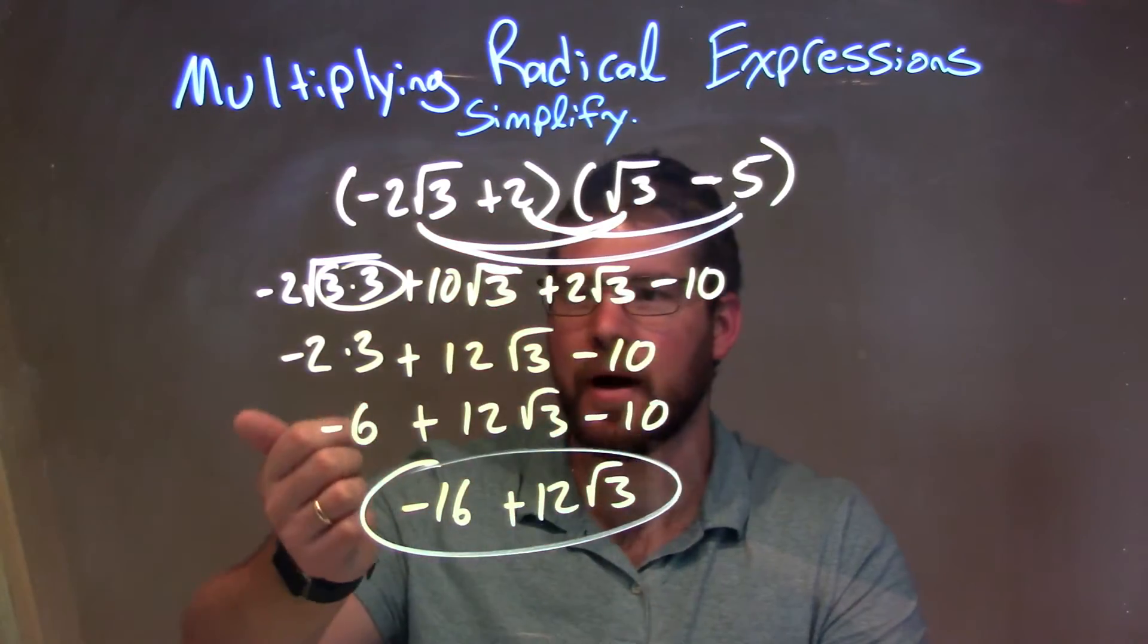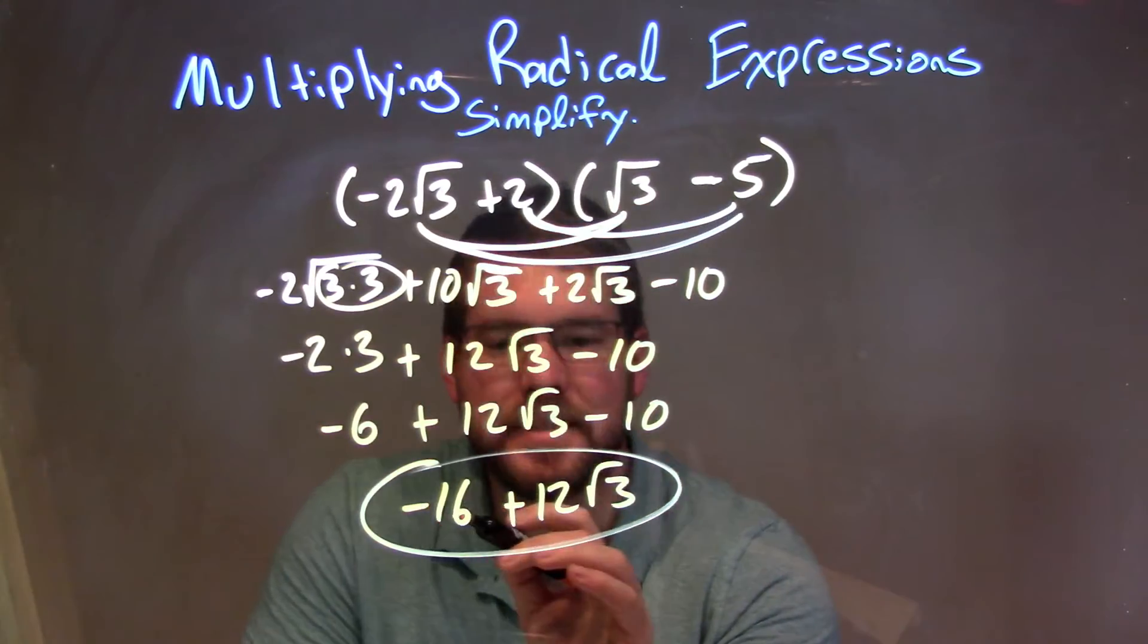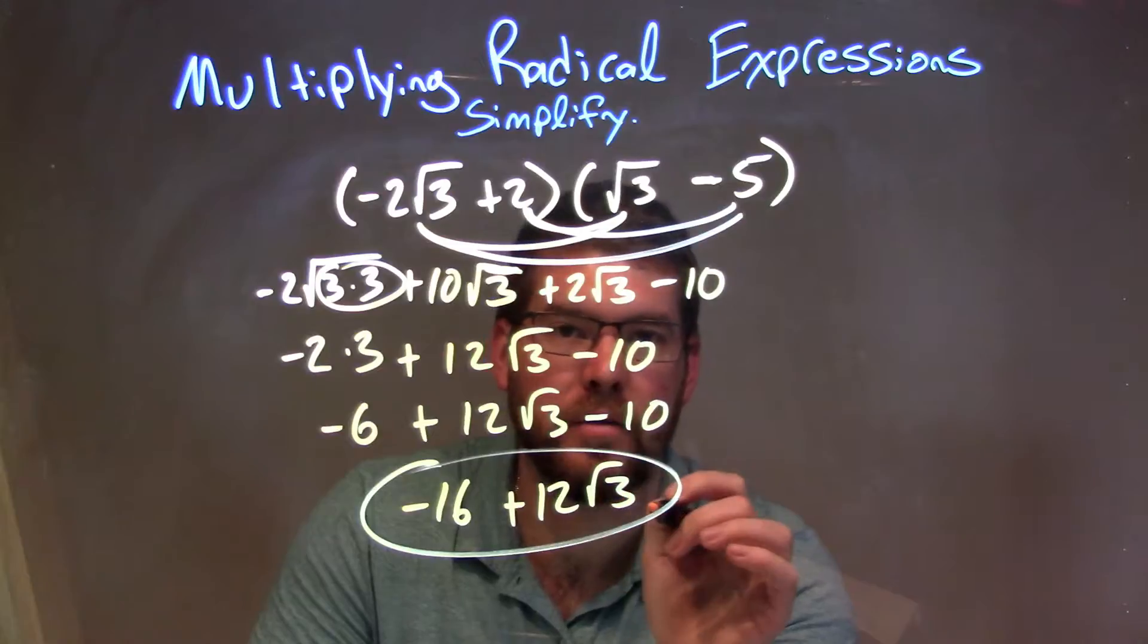Minus 10 combined with the minus 2 times 3, which is minus 6, to give us our final answer here of just a minus 16 plus 12 square root of 3.